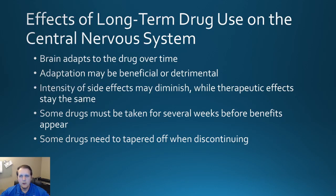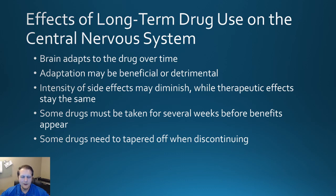With long-term use of medications on the central nervous system, the brain does adapt to it over time, just like we saw with other systems. The adaptation can be beneficial in some cases or can be detrimental. Patients coming off of these medications may have a bit of withdrawal — some may be physiological such that they need that drug around to maintain normal, some may be more psychological. You can also find that as they're on medications for longer periods of time, the actual side effects may diminish, even though they keep the therapeutic effects. And some drugs actually have to be taken for several weeks before you even start to notice benefits.